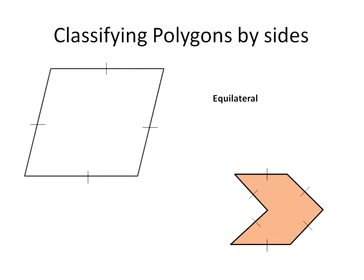Now that we know what a polygon is, let's classify some polygons by side length and angle measurements. An equilateral polygon is a polygon that has the same length sides. We classify those using tick marks — one tick mark consistent all the way around means each side length is congruent. This also applies whether it's a concave polygon, where an angle caves into the shape, or a convex polygon where all sides pop outward. Concave or convex does not affect the equilateral classification.